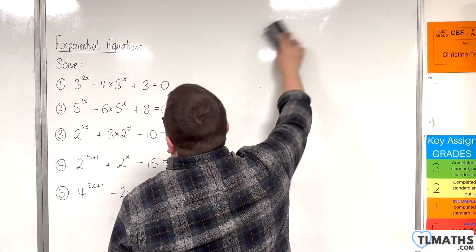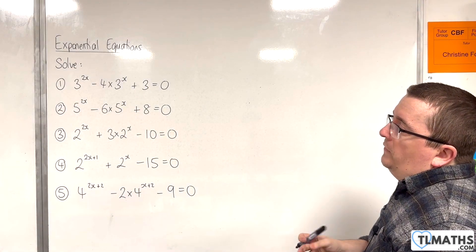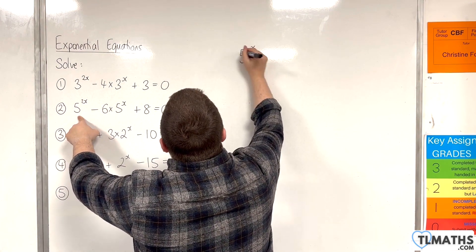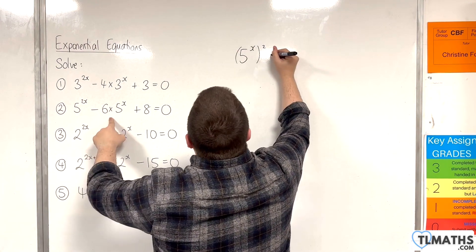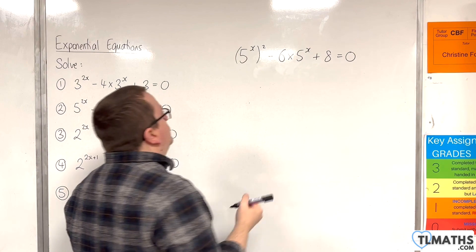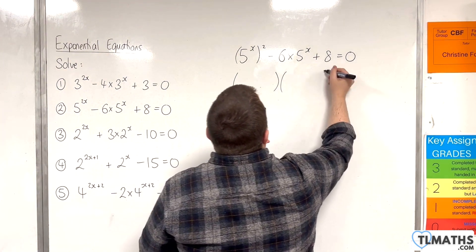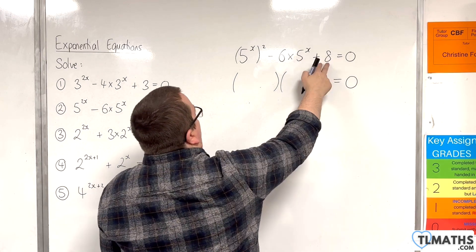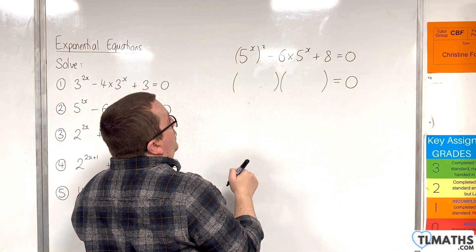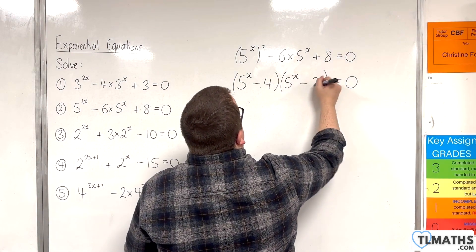Number 2: 5 to the 2x, take away 6 times 5 to the x, plus 8 equals 0. First, write 5 to the 2x as 5 to the x, all squared. Then take away 6 lots of 5 to the x plus 8 equals 0. We can factorise that — two numbers that multiply to make 8 but add to make minus 6 are minus 4 and minus 2. So the factors are: 5 to the x take away 4, and 5 to the x take away 2.